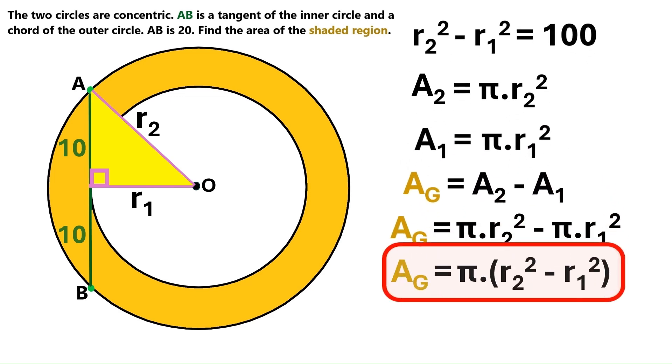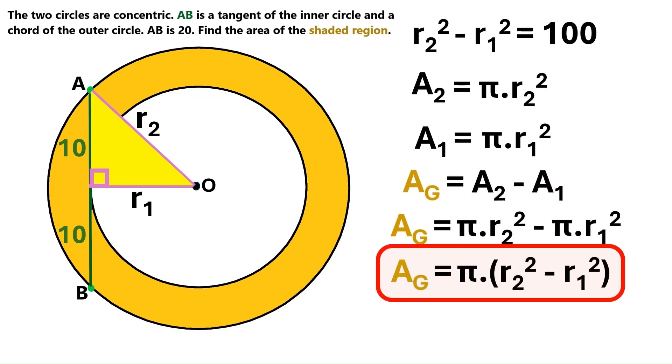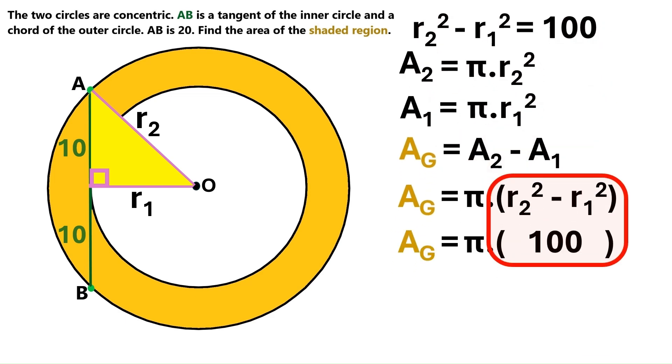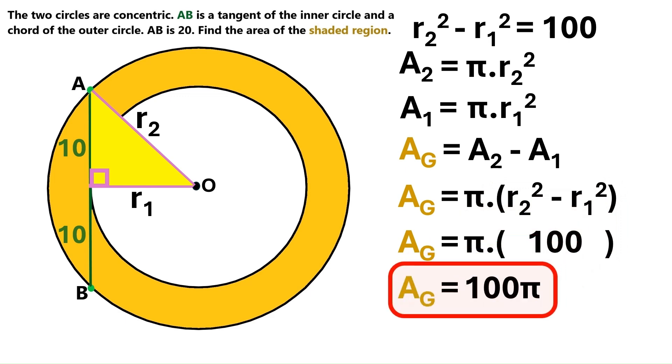We can now express AG as Pi times, inside brackets, R2 squared minus R1 squared. That's great because we already know that R2 squared minus R1 squared is 100. So we can replace everything inside the brackets with simply 100. And we find AG to be 100 Pi.